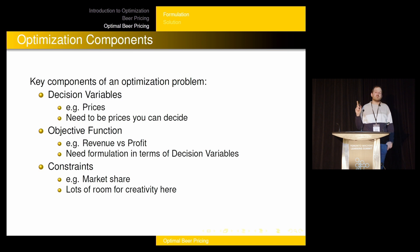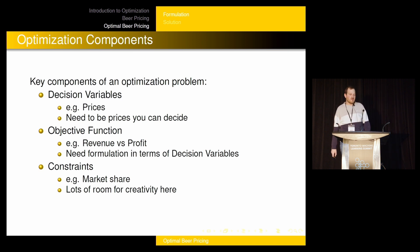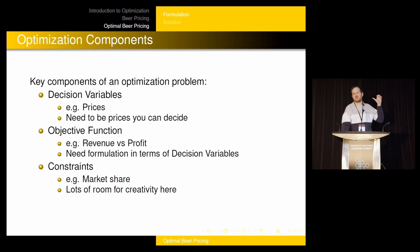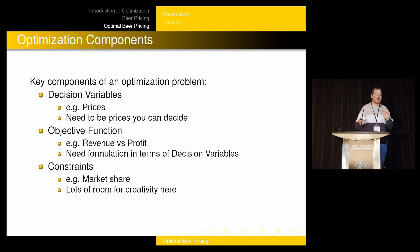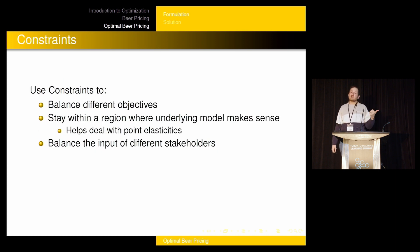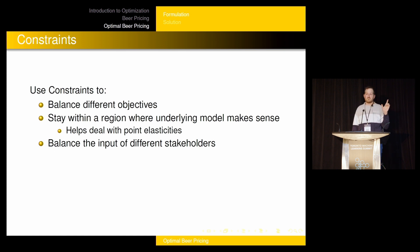The third component of the optimization problem is constraints — actually the most interesting one. A good example is market share: if you chose to optimize revenue or profit, you probably want a constraint on market share. That's how you can trade off the competing objectives, by putting constraints on the objectives you're not specifically optimizing for. There's also lots of room for creativity with constraints.